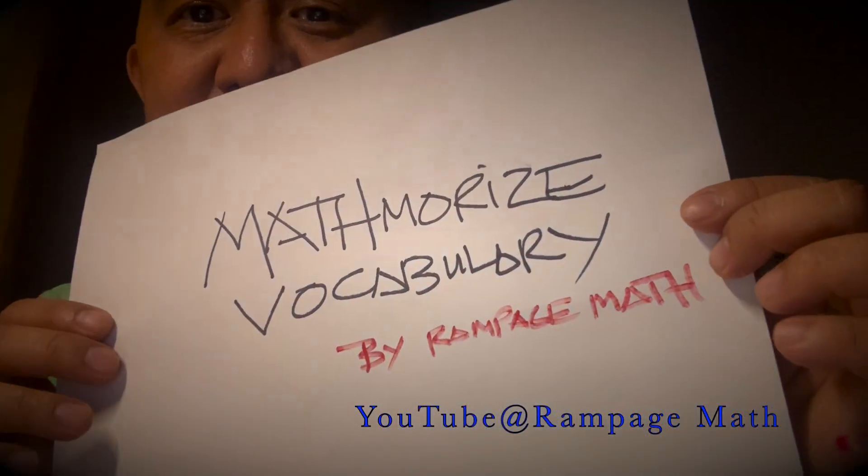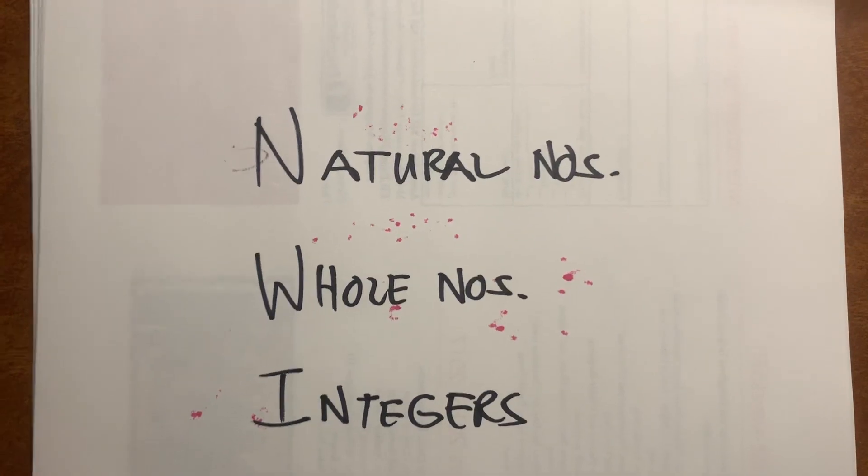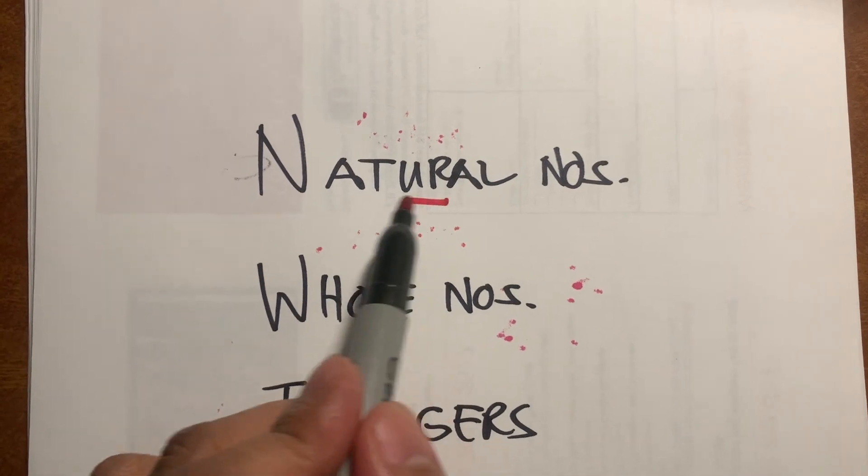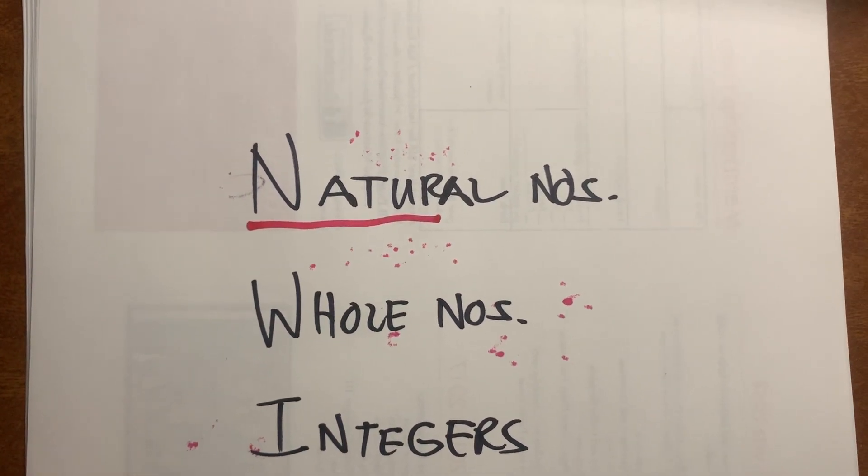It's Rampage Matt and are you ready for Matmarize Your Camulet? For natural numbers, think of the natural way, nature, natural way to count.